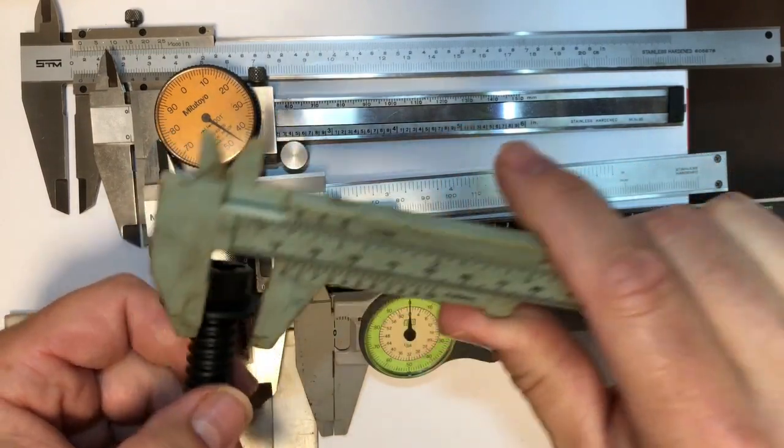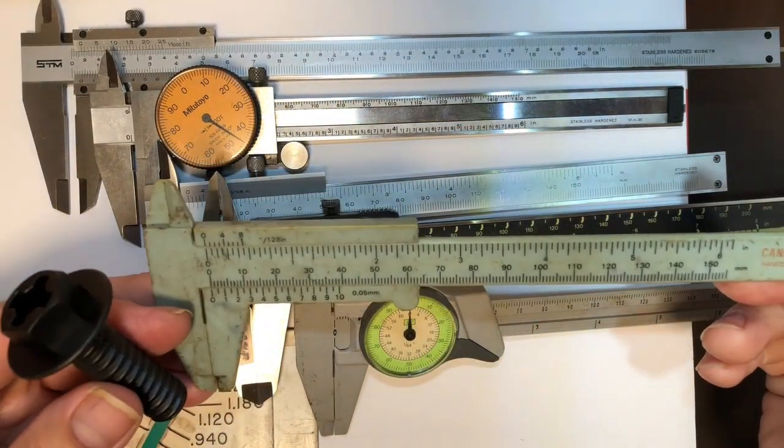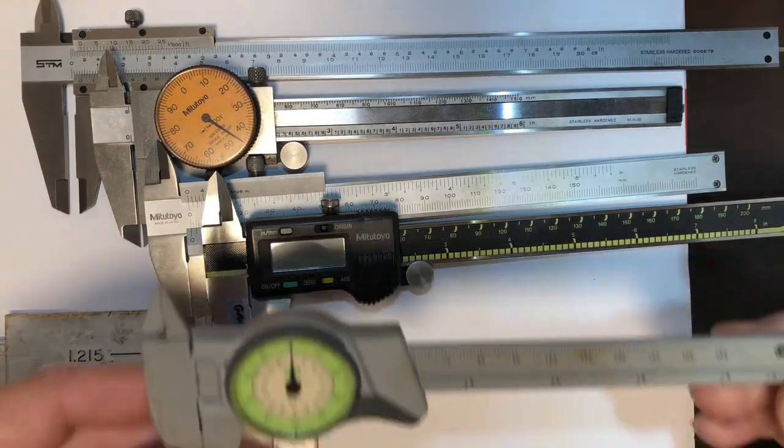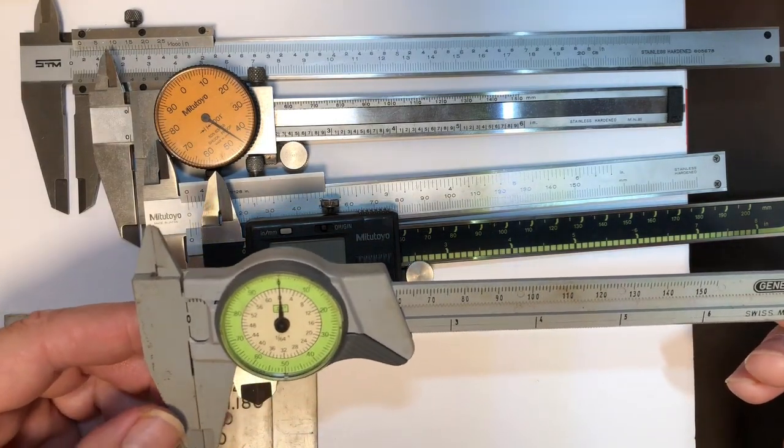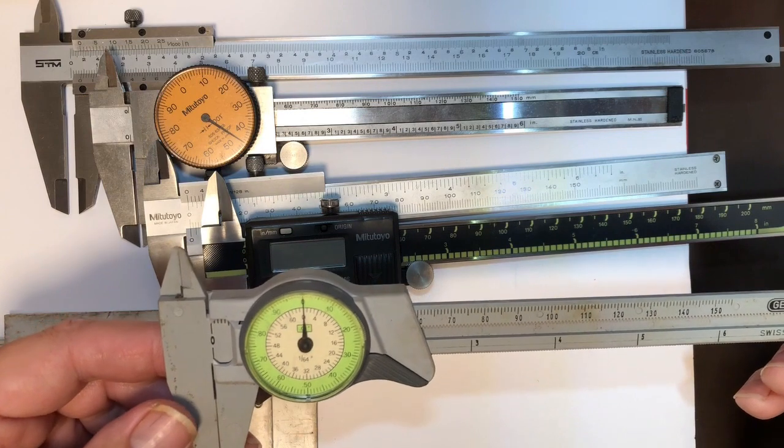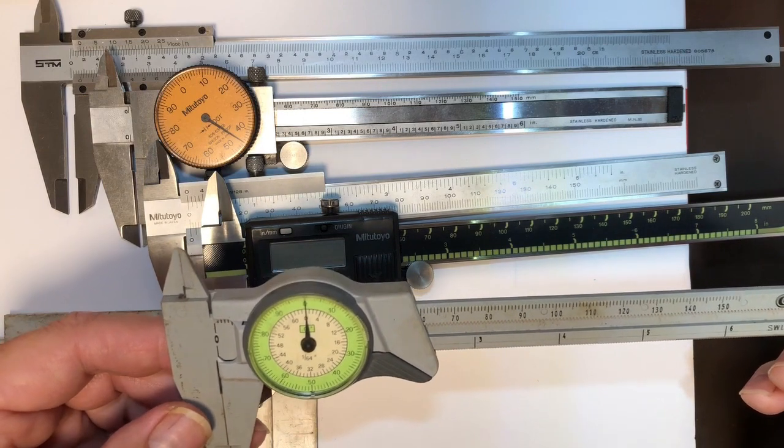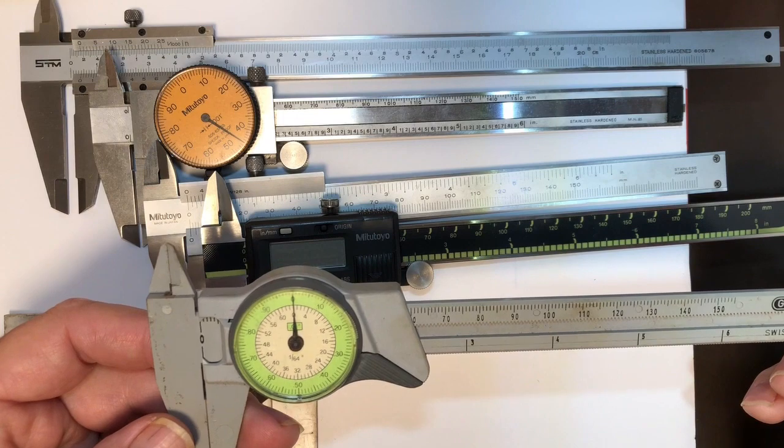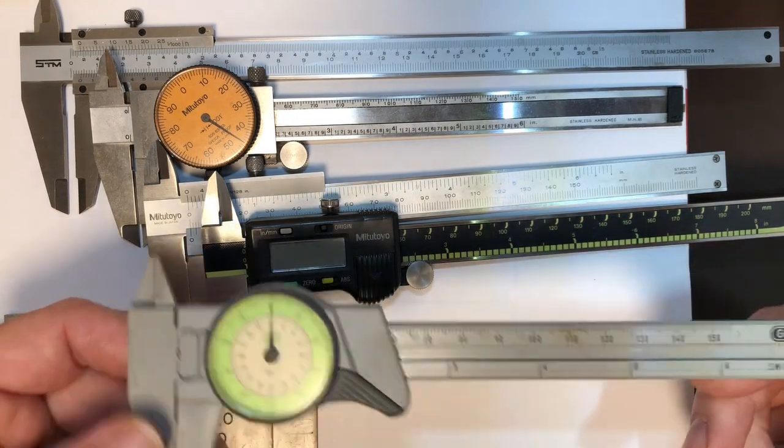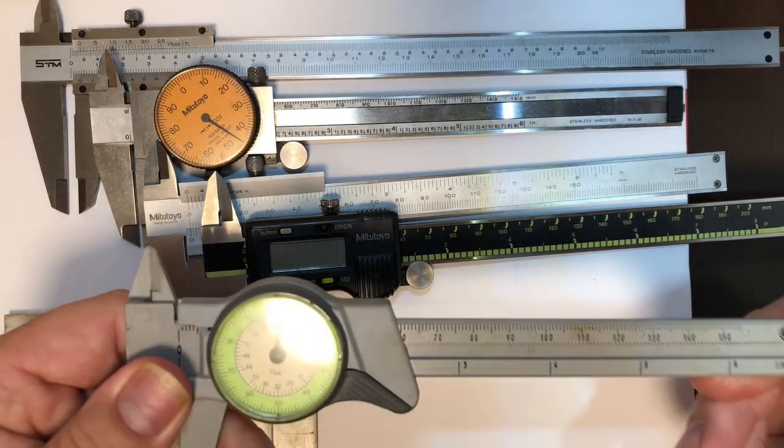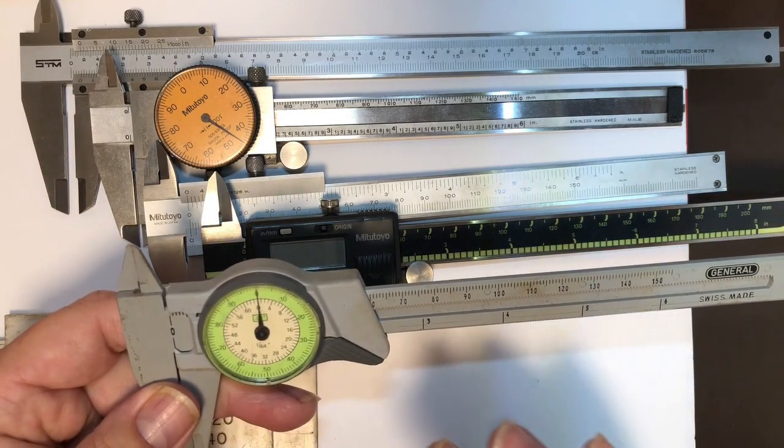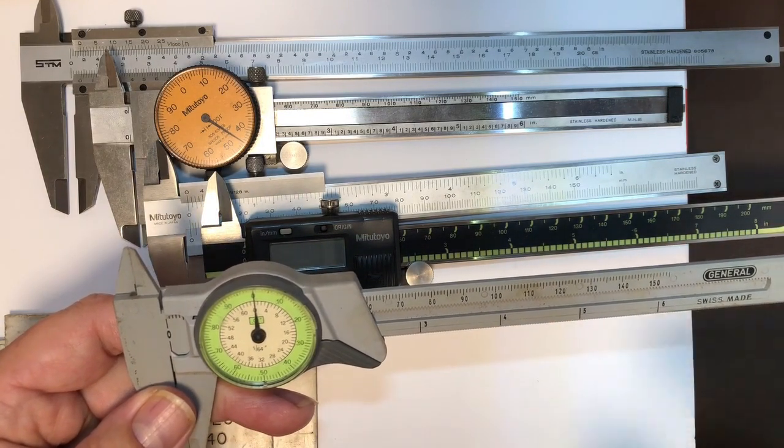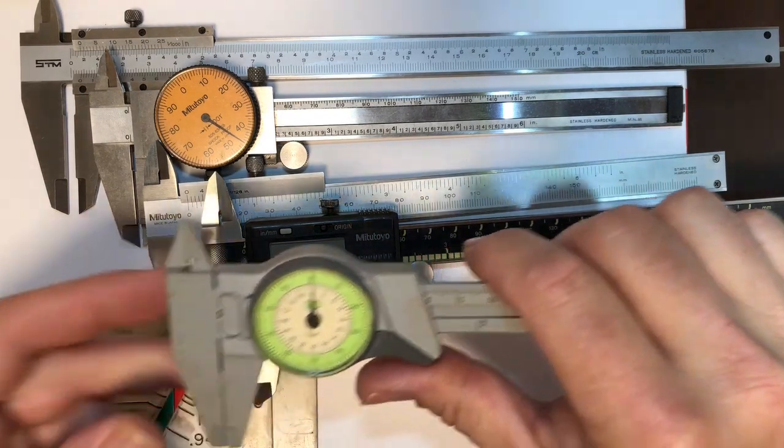So what we have here is a general Swiss made dial caliper. It's not the standard dial caliper that we're used to looking at. Obviously it's made out of plastic, relatively durable, you can flex it a little bit if you need to. It has most of the characteristics of a standard caliper or vernier.